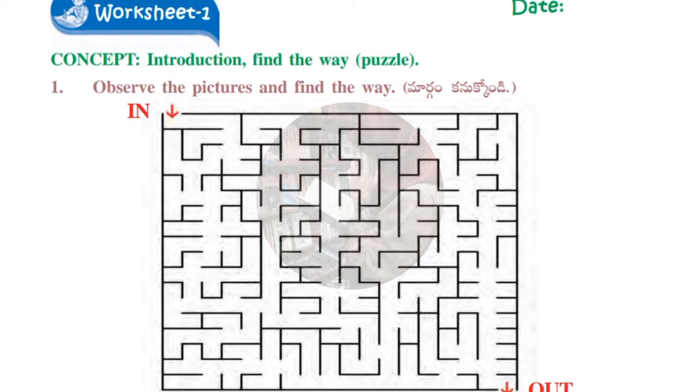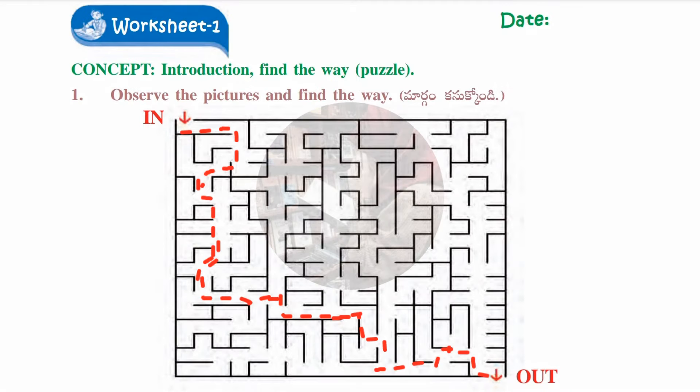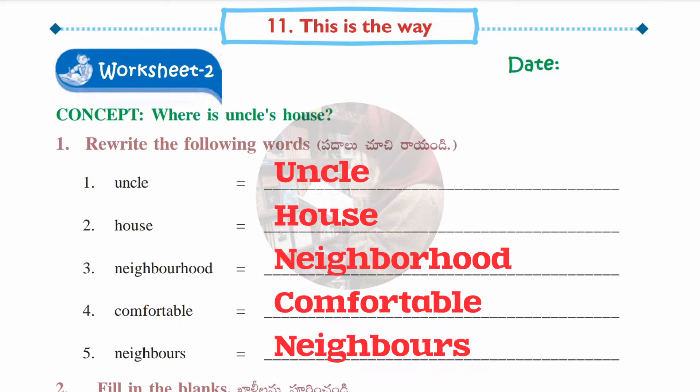Now the first worksheet, taken from the concept 'Find the Way.' This is a puzzle — you need to make your kids do it by themselves. An in and out is given, so you need to draw a dotted line from in to out without any distractions.